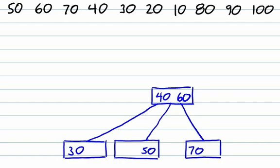Pause for a second and take a look. At any point in this insertion process, we're always going to be left with a valid 2-3 tree. The leftmost child, 30, is less than the value 40; the value 50 is in between 40 and 60; and the value 70, the right child, is greater than 60.